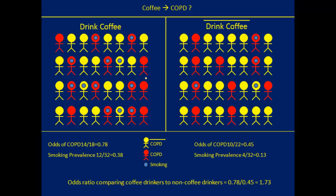The solution is to first recognize the problem: the percentage of smokers among coffee drinkers is not balanced with the percentage among non-coffee drinkers. If we had 50% smokers on both sides, we wouldn't have a problem. Any association between coffee drinking and COPD couldn't be due to smoking because it would be balanced on both sides. The solution is to split the analysis into two parts to actually balance the number of smokers.